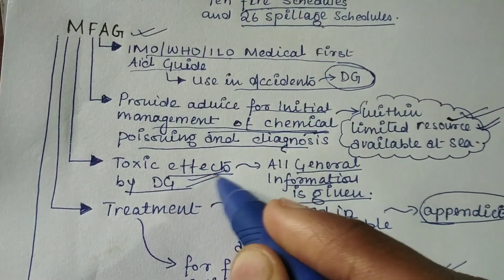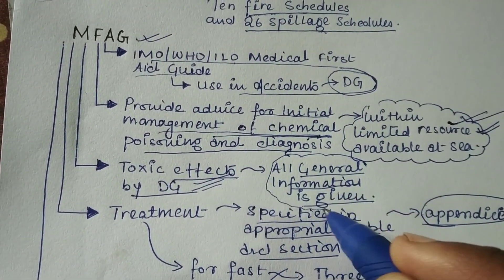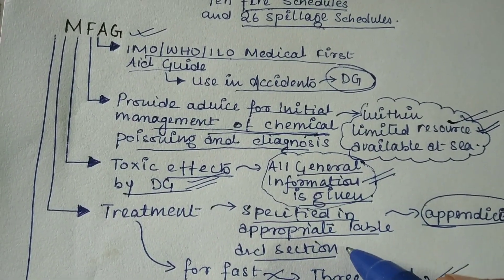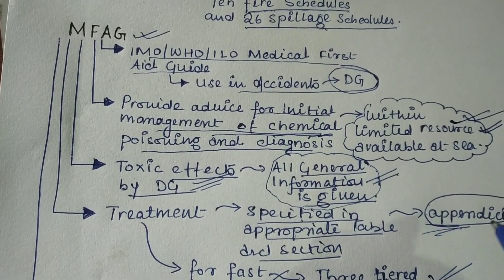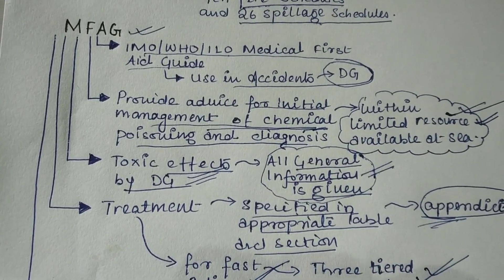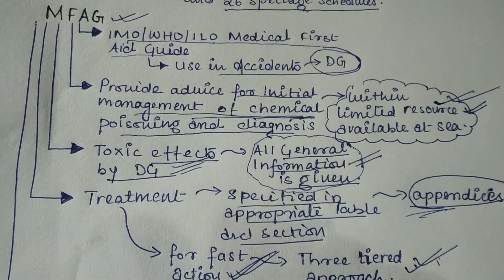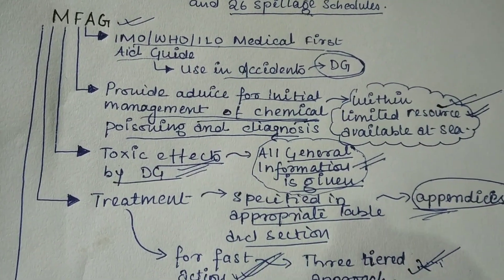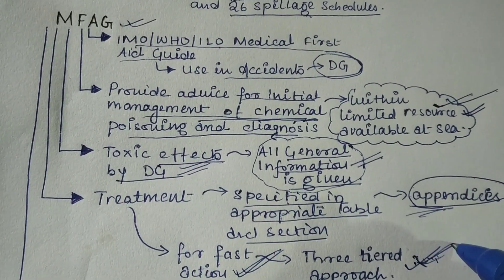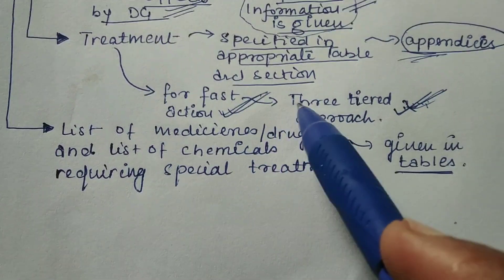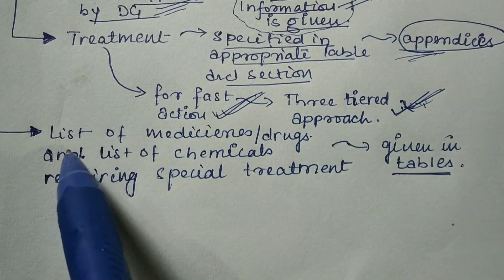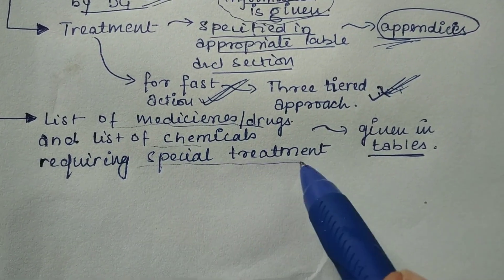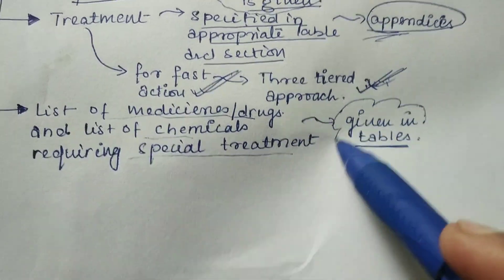The toxic effects of dangerous goods and all general information are given in this guide. For treatment, specified appropriate tables and sections are made in the appendices of this book. For fast action, a three-tiered approach is also given in this book, which you may have seen on board during training sessions. The list of medicines and drugs, and the list of chemicals requiring special treatments, is also given in the tables.